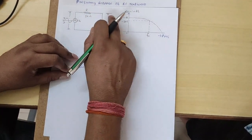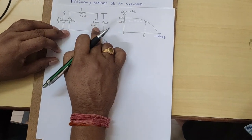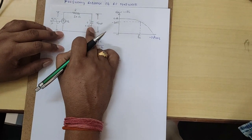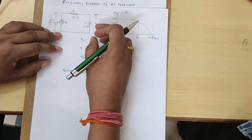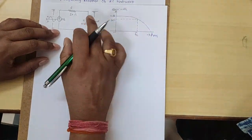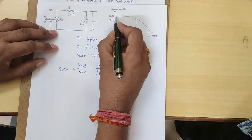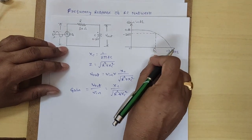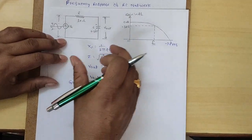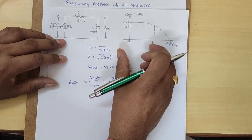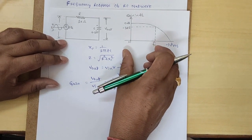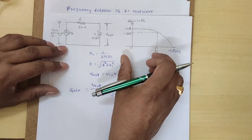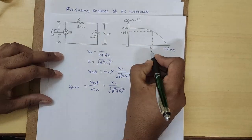This circuit acts as a low pass filter. R is connected in series with the capacitor, and the output is taken across the capacitor — so it acts as a low pass filter. This is the graph of a low pass filter. We have to find the cutoff frequency here. Up to the cutoff frequency, it allows only low frequencies. It allows low frequency signals up to the cutoff frequency and attenuates the high frequency signals.